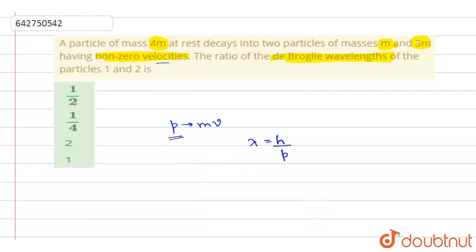So when you are asking about the ratio of the wavelengths of 1 and 2, you will write the expression for 1 and 2. When you write it, lambda 1 by lambda 2 equals h by p1 divided by h by p2.